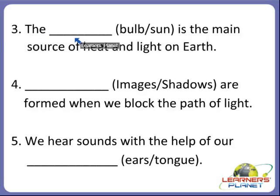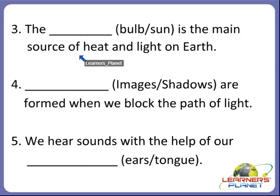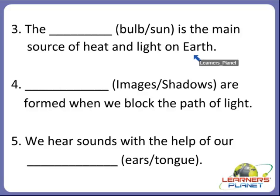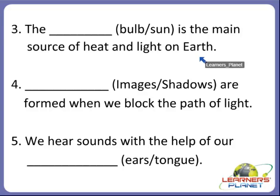The dash is the main source of heat and light on earth. What will be the answer? Is it earth or sun — which is the main source of heat and light on earth? Yes, it is the sun.